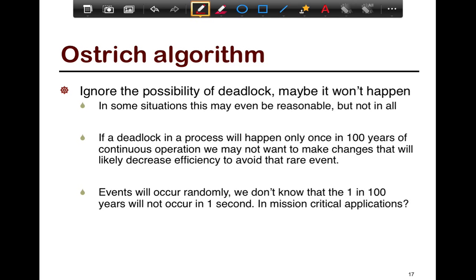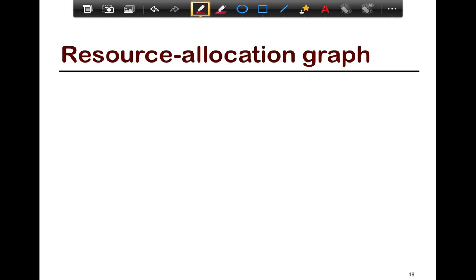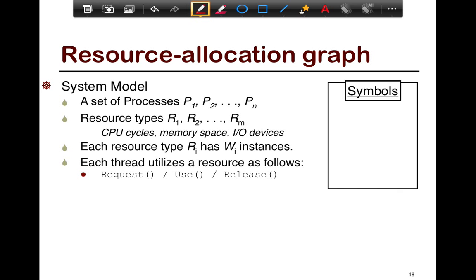The Ostrich algorithm is very simple — it ignores the possibility of deadlock and recovers from it if deadlock does happen. Under normal system operation conditions, you don't check for deadlock or try to prevent it. You allow it to happen, then figure out a way to detect it and break one of the previously listed conditions using one of the techniques discussed, and then recover from deadlock. Next, I'll talk about a technique called resource allocation graph, which helps you visualize the deadlock itself and then break and prevent it.